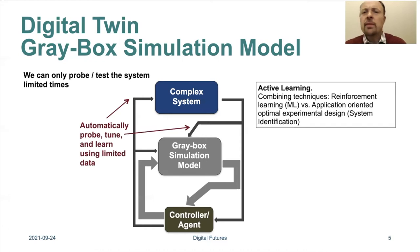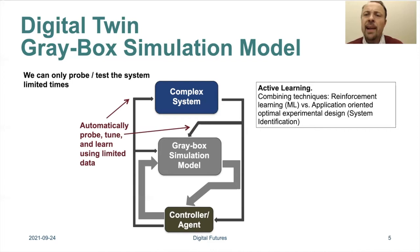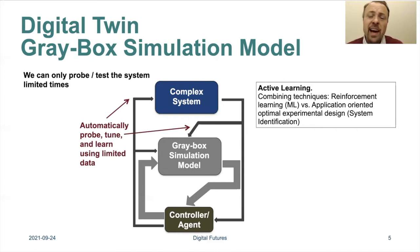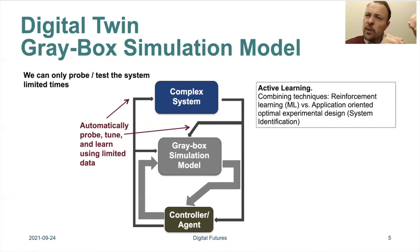We have different techniques involved here. One is active learning, also called optimal experimental design, where we probe the system in the smartest way to learn as much information as possible so we can improve the model.